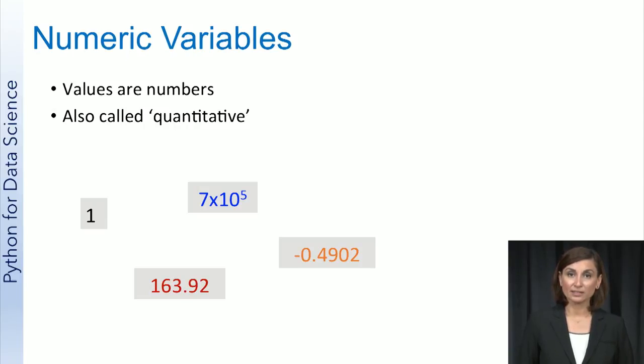As the name implies, numeric variables are variables that take on numbers. They can be measured and their values can be sorted in order in some way. Note that a numeric variable can take on just integer values or be continuous valued. It can also have just positive numbers, negative numbers, or both.